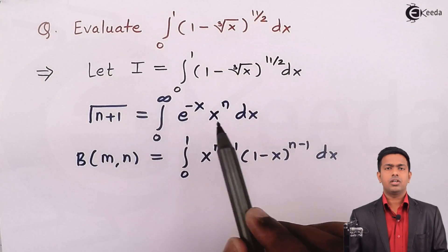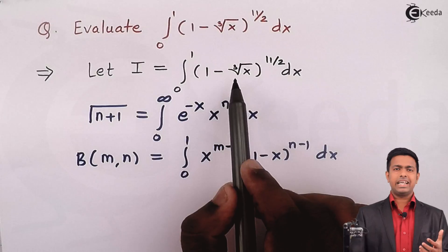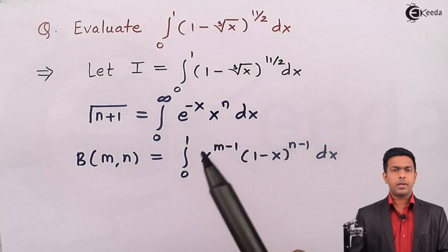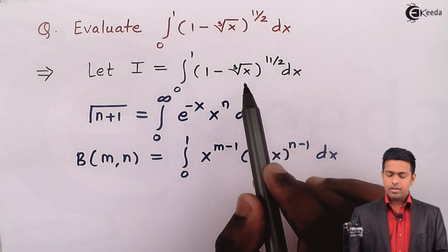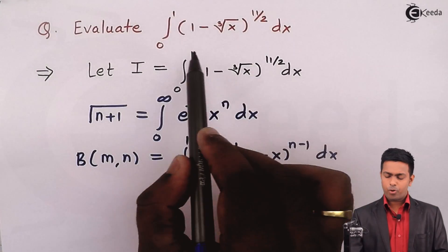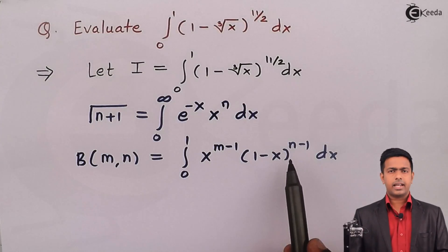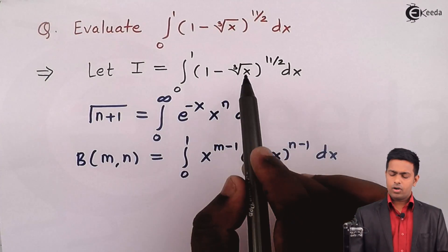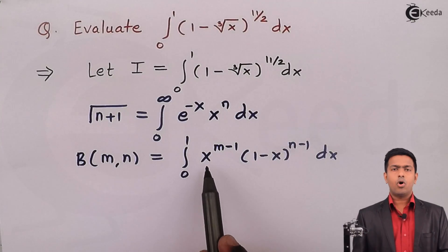Here, if you see our question, we have all algebraic terms. So if we do integration by substitution, we can create one more algebraic term and then solving this problem by the beta function will become easier. Whereas if you try to solve it by the gamma function, you would need to bring in an e^(−x) term, which will be difficult. So I'll be solving this problem using the definition of beta function. In the second bracket of the beta definition we have (1 − x), but in our question we have (1 − cube root of x), so we need to remove this cube root.